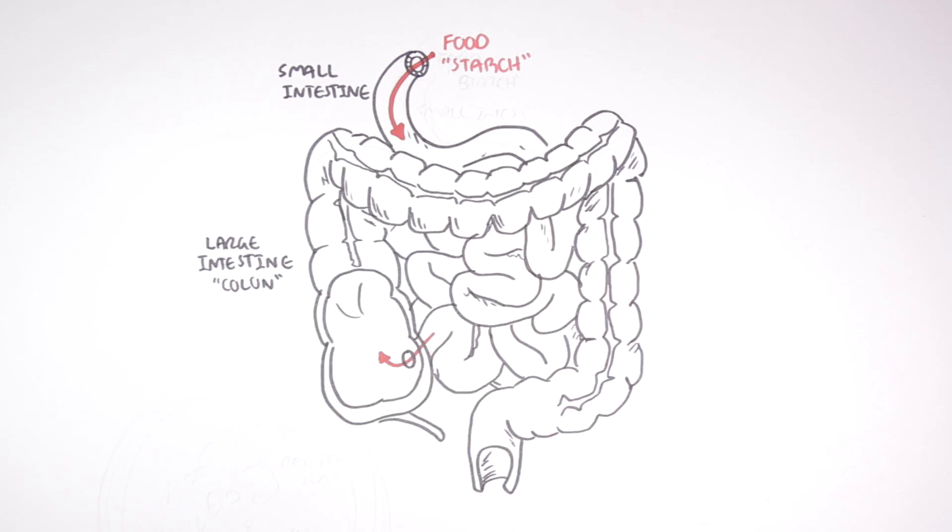Resistant starch, for example, is a portion of starch that escapes digestion in the small intestine because it is resistant to human digestive enzymes.